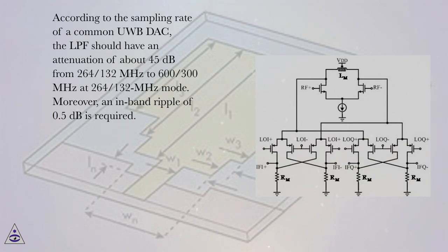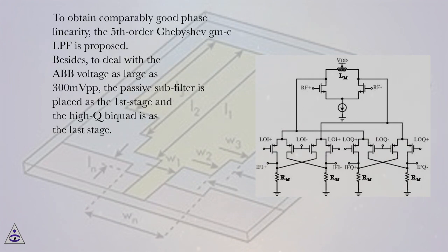Moreover, an in-band ripple of half a dB is required. To obtain incomparably good phase linearity, the 5th-order Chebyshev GMC LPF is proposed.